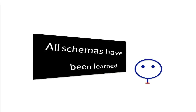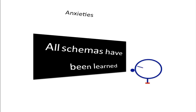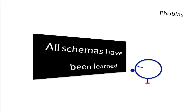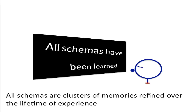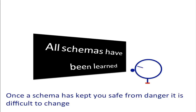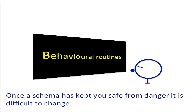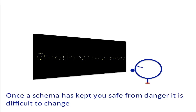Because all schemas are built upon previous experience, they've all been learned. Obviously we aren't born with these knowledge structures. As we saw in the first video, they became refined over a lifetime. Those with survival value are difficult to change, and so we have established routines for behaving and coping, and thinking, and for feeling.